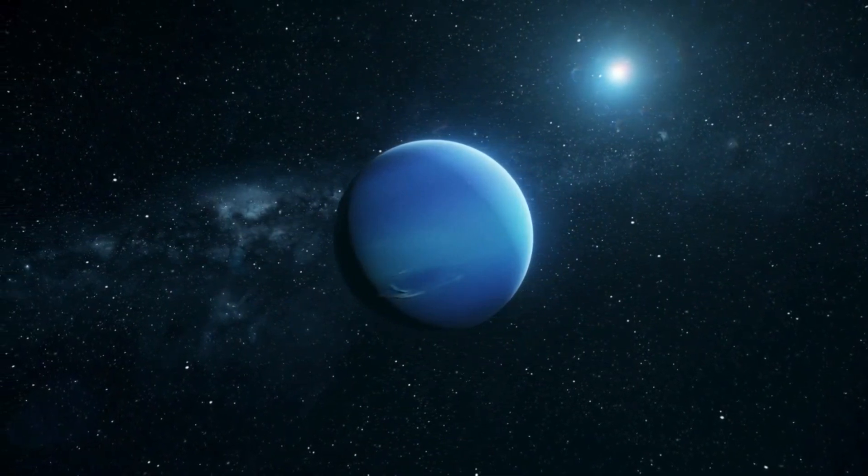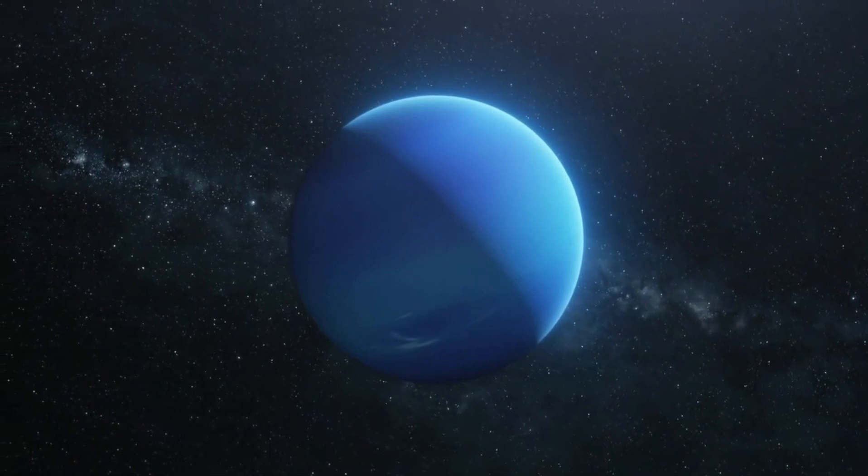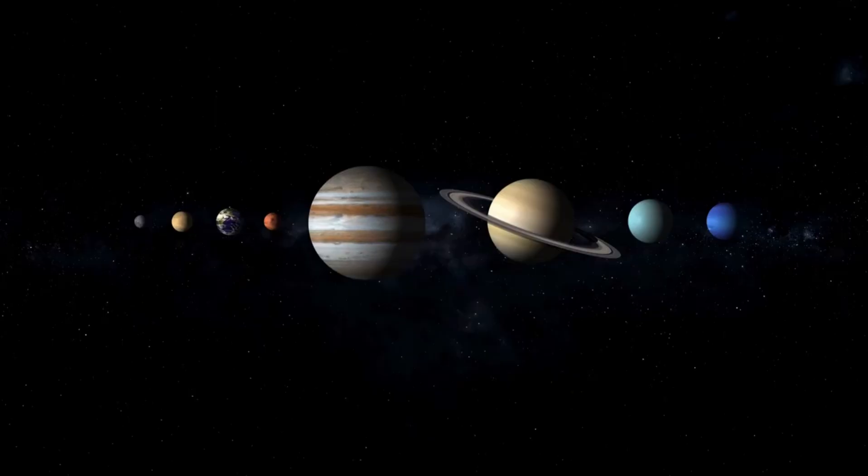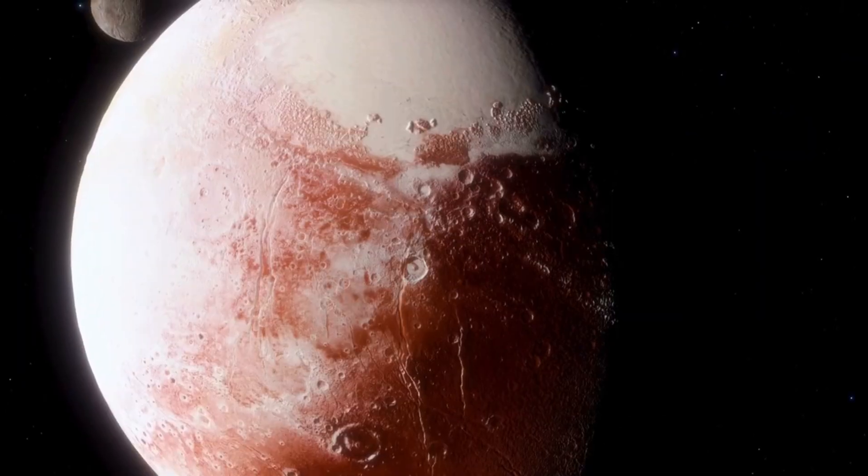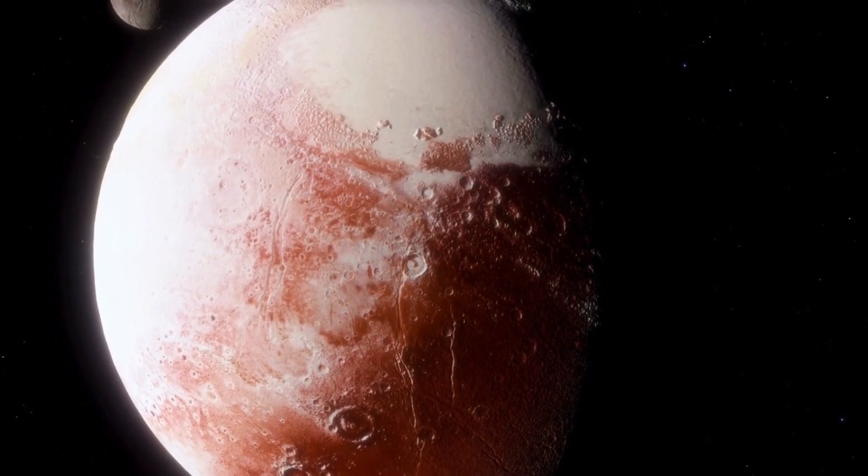Neptune is composed mainly of gases, liquids, and ice, officially classifying it as an ice giant. One orbit around the sun takes Neptune a staggering 164 years. In fact, Neptune was the first planet to be discovered by mathematical calculations rather than direct observation.